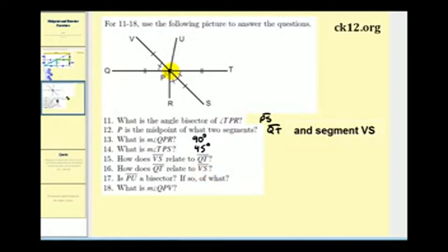Well, they intersect at point P and notice that point P is the midpoint for segment QT and it's also the midpoint for segment VS. So the two segments are each other's bisectors. VS bisects QT and QT bisects VS. Notice how I'm not saying perpendicular bisector because they don't form a right angle, but they do bisect each other.